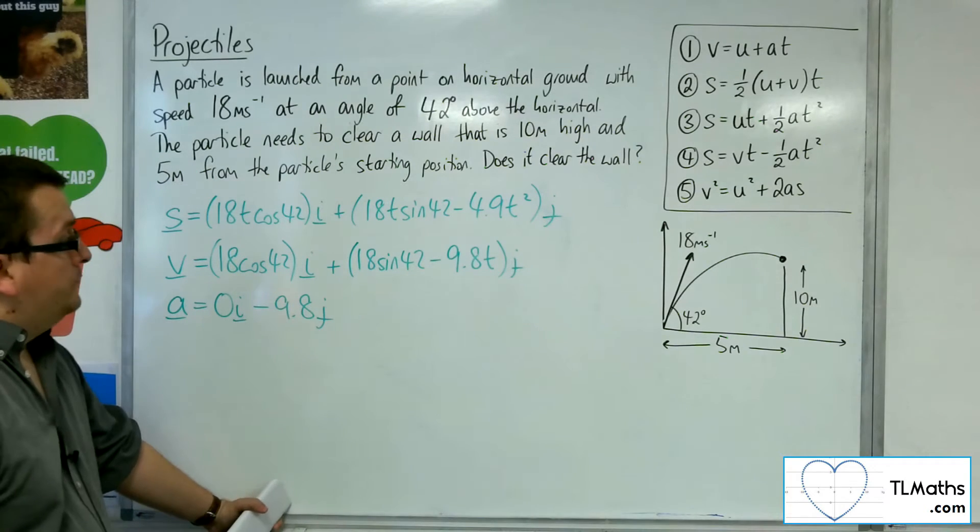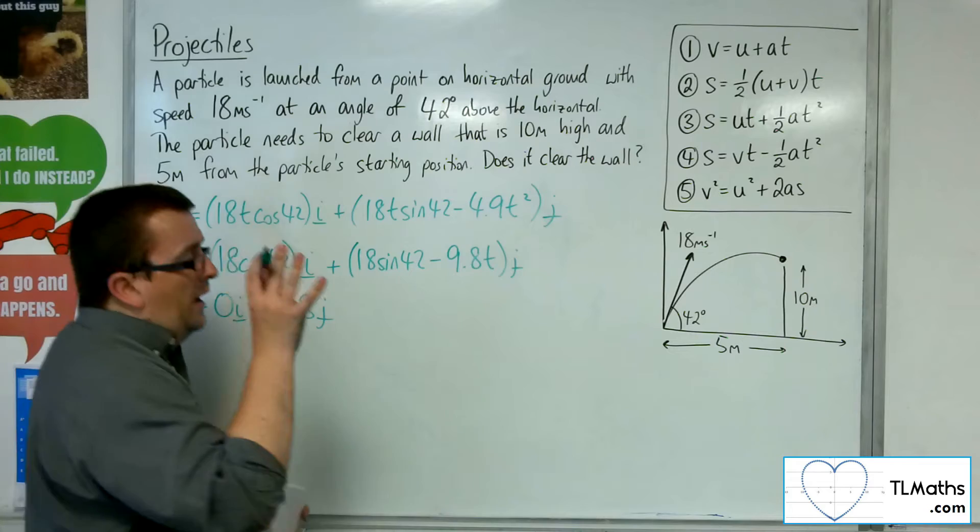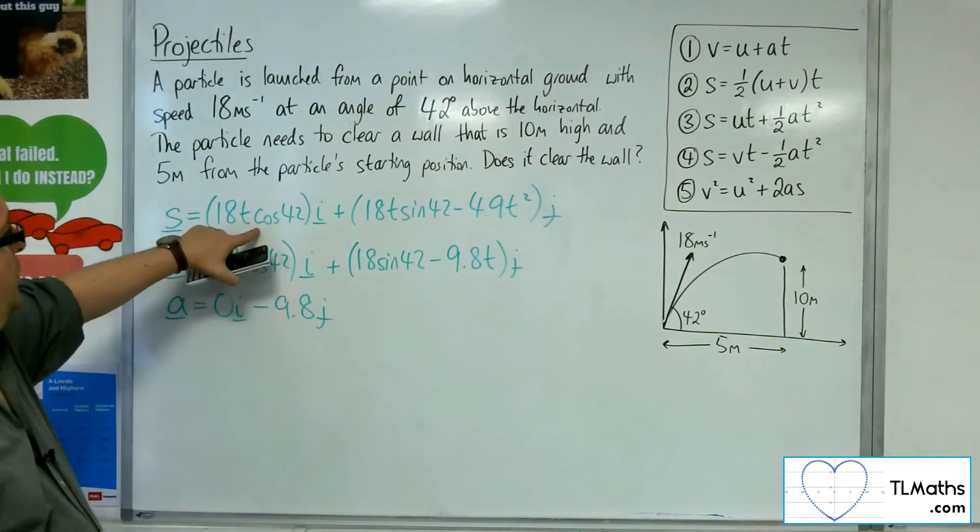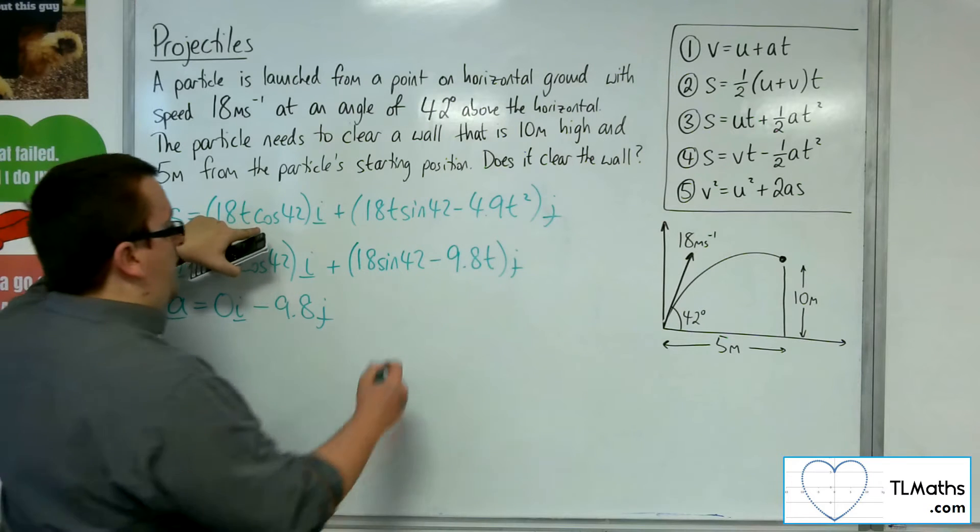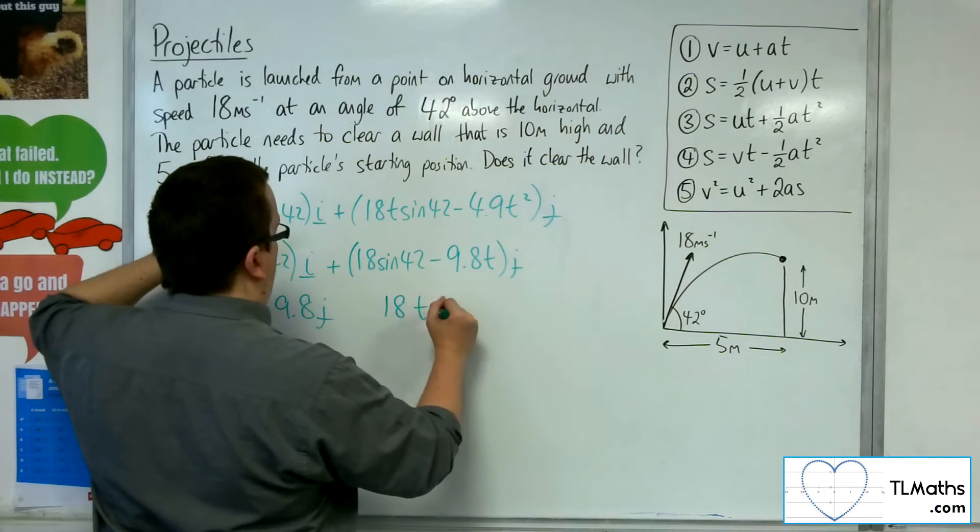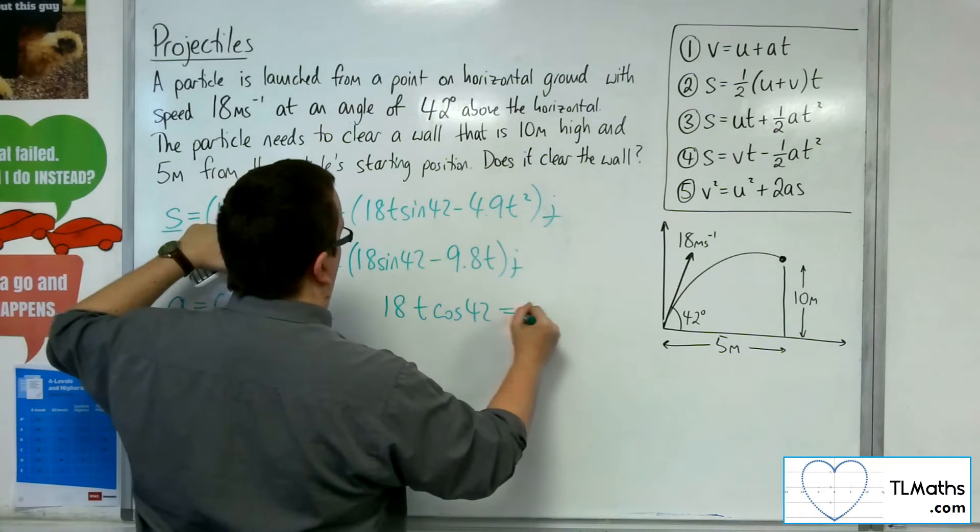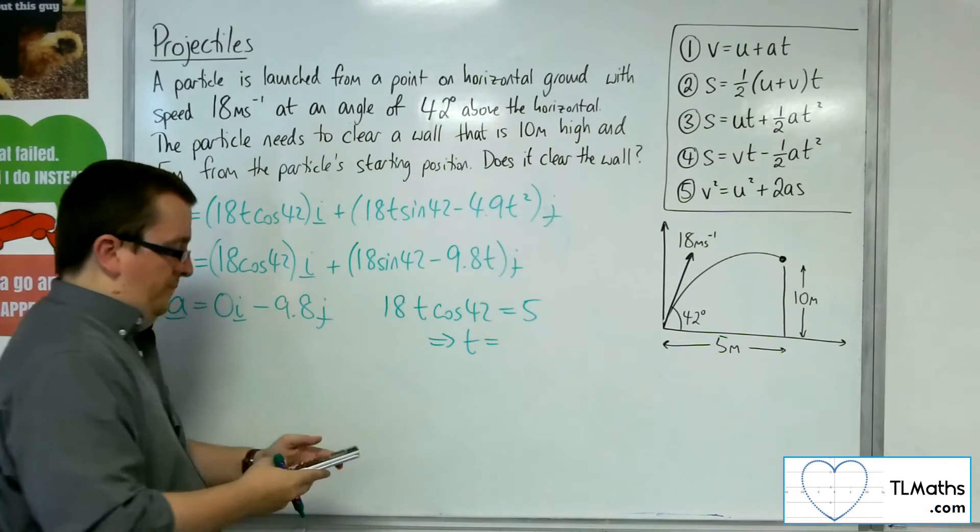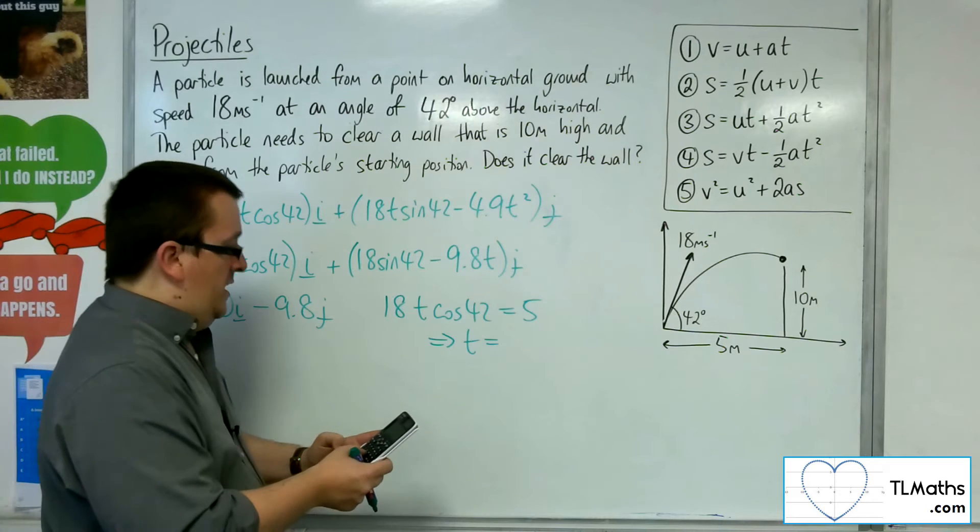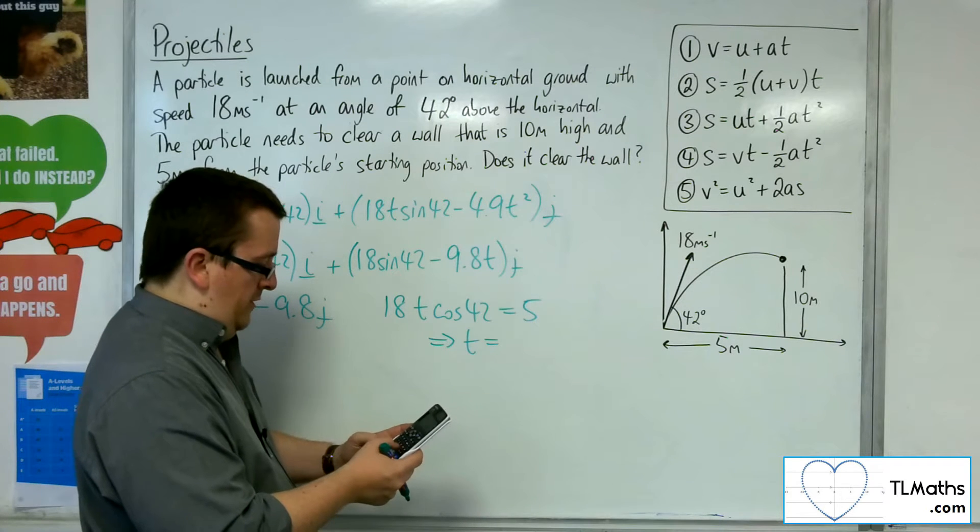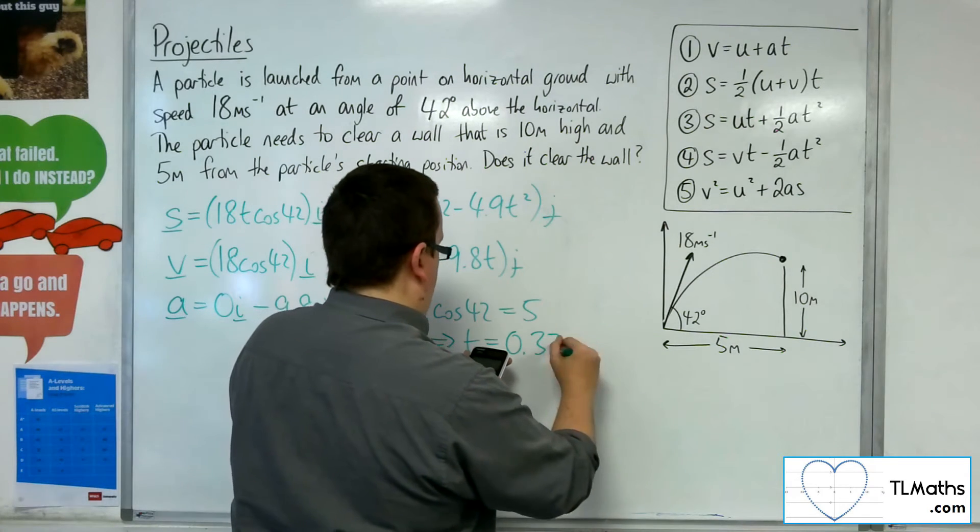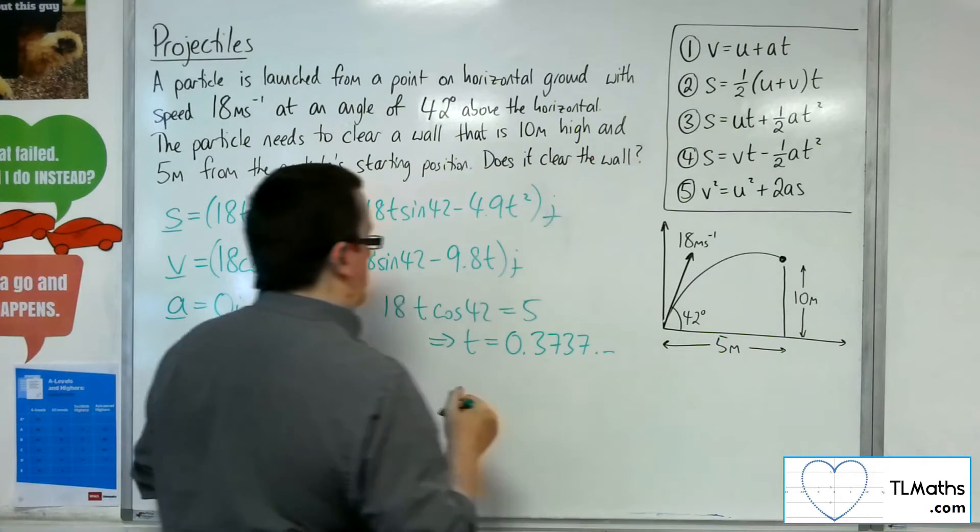Now I need to find the time at which the horizontal component is 5 metres. So the horizontal displacement is this one here. So 18t cosine 42 is equal to 5. So that will allow me to find the time. 5 divided by 18 times cosine 42 gets me 0.3737.